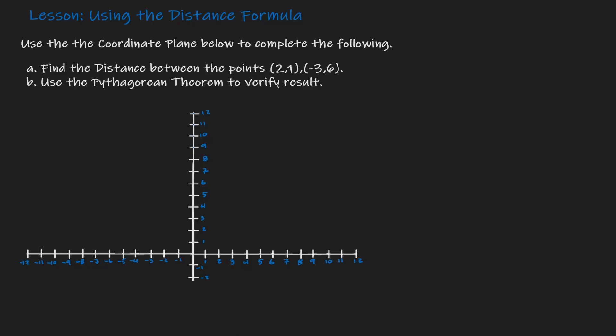Welcome. Today we're going to see how we can use the distance formula. So what we have here are two points: 2 comma 1 and negative 3 comma 6.